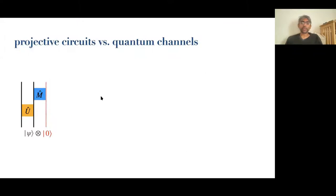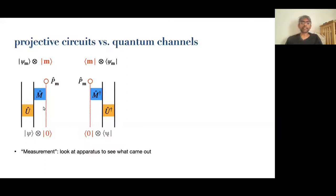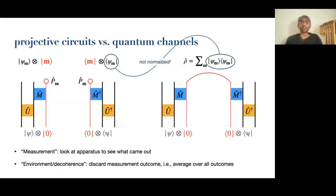When you talk about open quantum systems, what you mean is that you call some of your degrees of freedom the system and some of them the environment, and you divide everything you do into unitaries that act only in the system and unitaries across the system-environment boundary. Once you have this very general description, you can do one of two things. You can either look at the environment — and if you look at the environment, that collapses the wave function of the environment, and it also induces a collapse in the wave function of the system, and that's what's called a measurement. The other perspective is that you don't know what the environment is, you have no control over it, so you can't look at it — you have to trace over it.